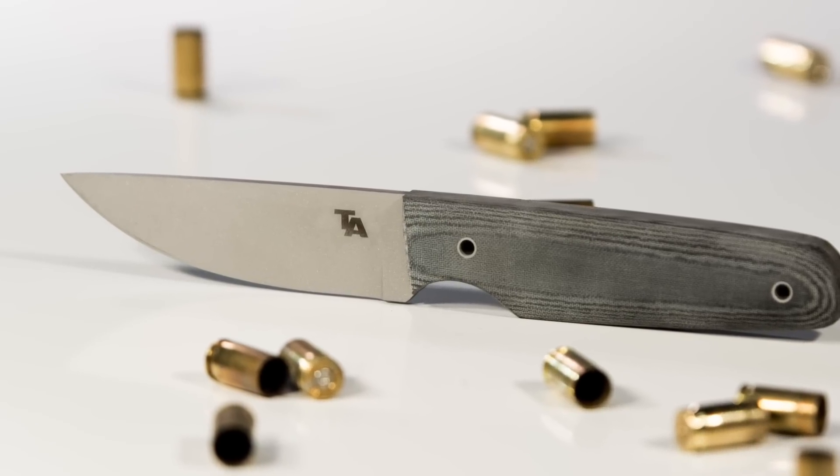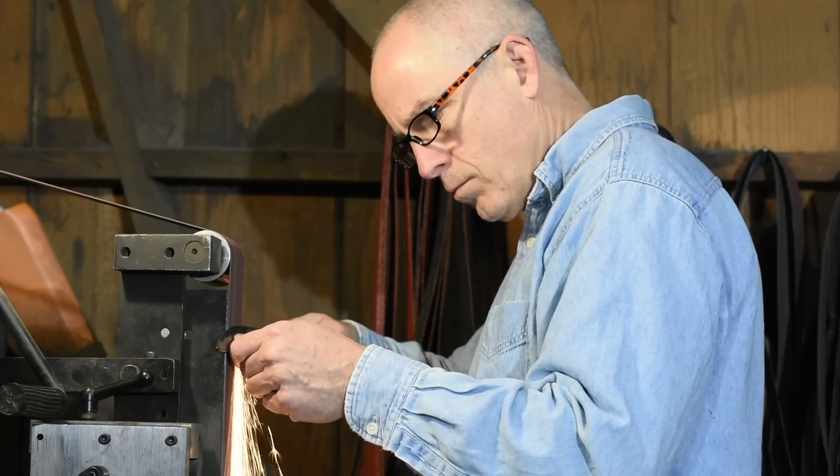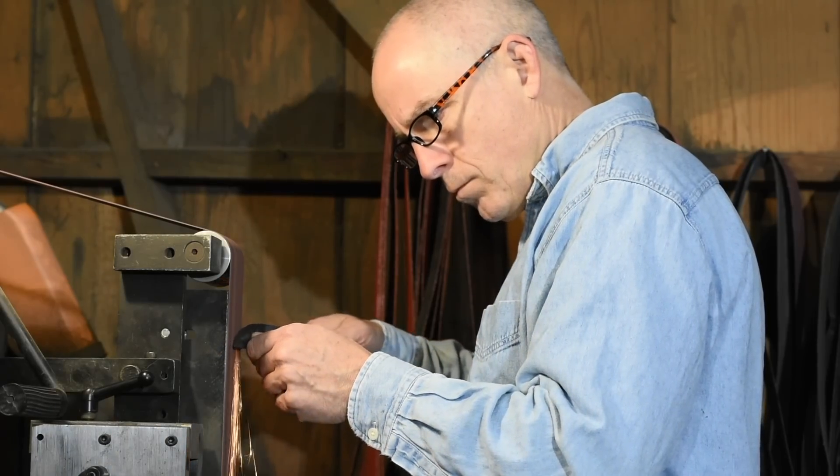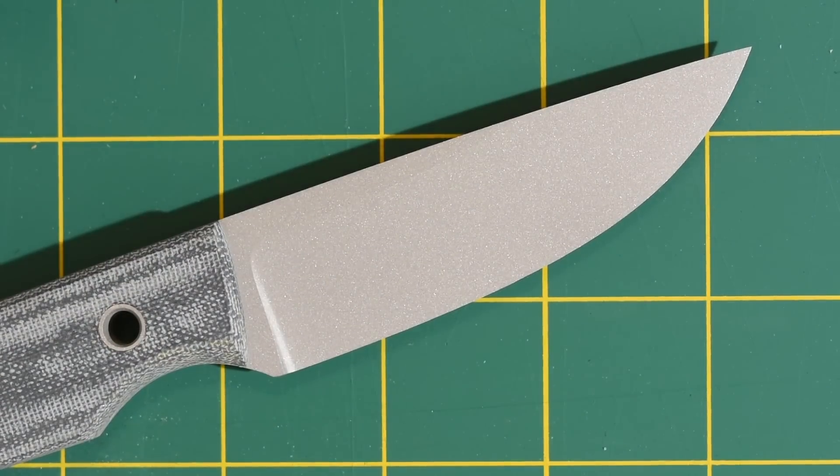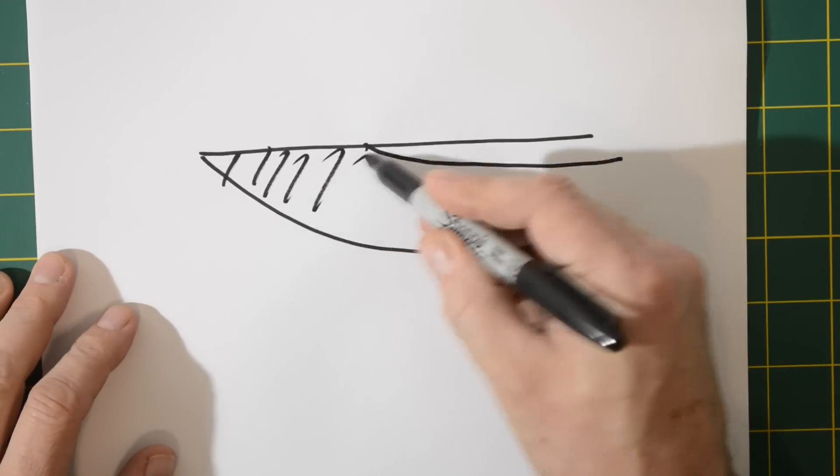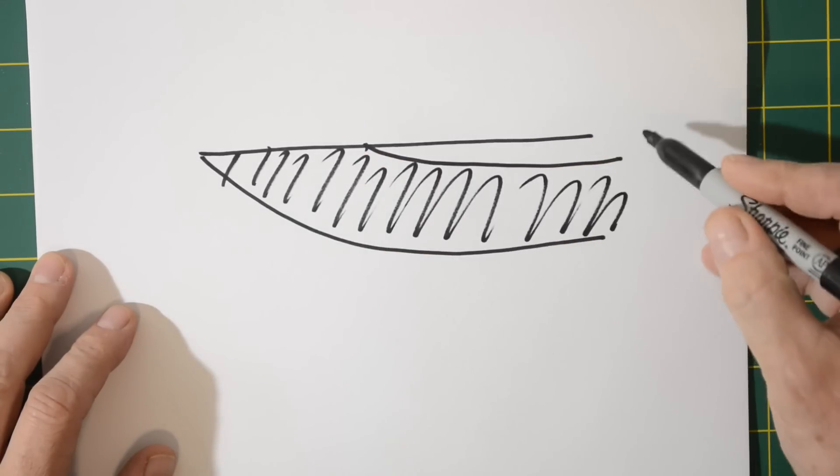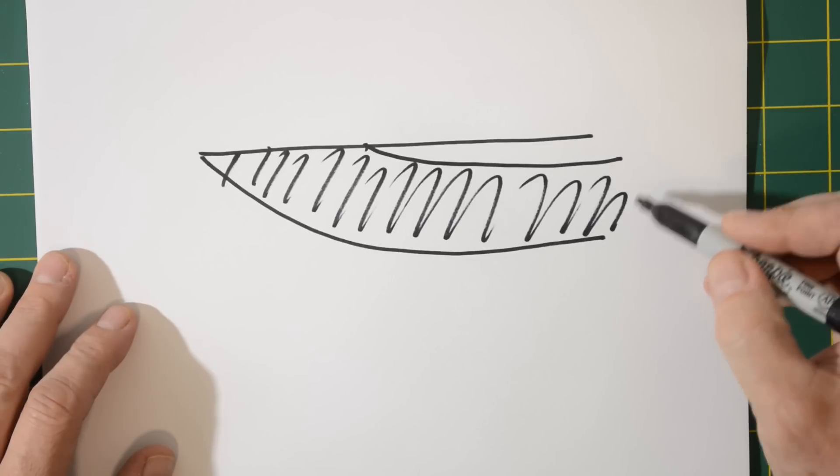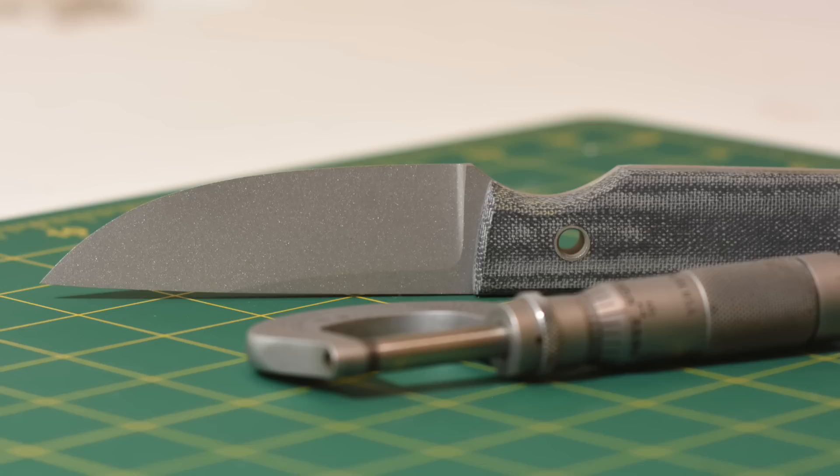If you understand the basic concepts here, you're well on your way to understanding the trickier grinds. Let's start with definitions. The bevel is this part, the face on your knife that tapers down to the cutting edge. In other words, it's what distinguishes a knife from a crowbar.